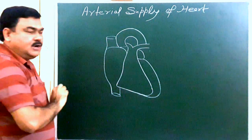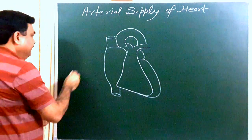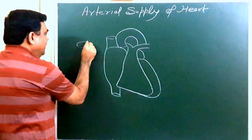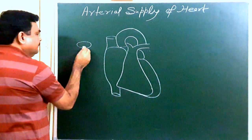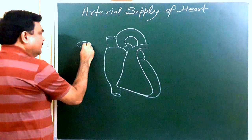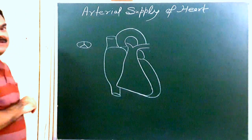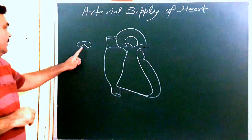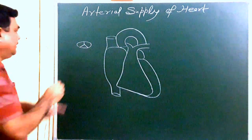There is ascending aorta. If you make a diagram of the ascending aorta, you will find it like this, with three cusps present. This is the anterior cusp.